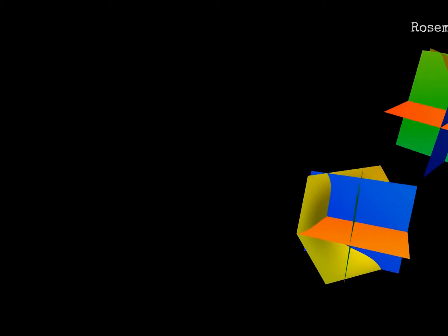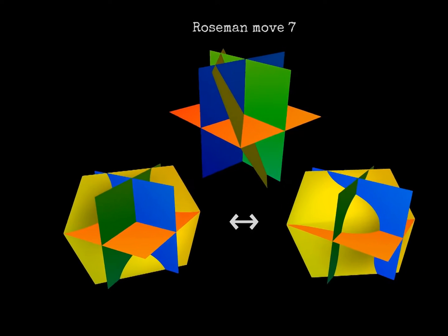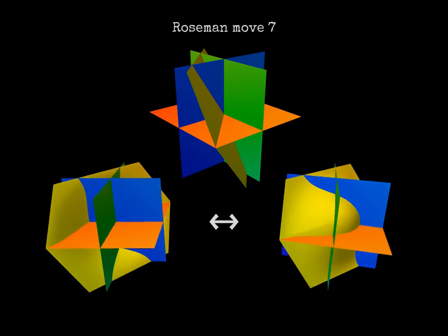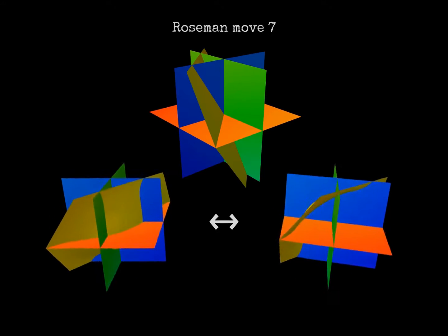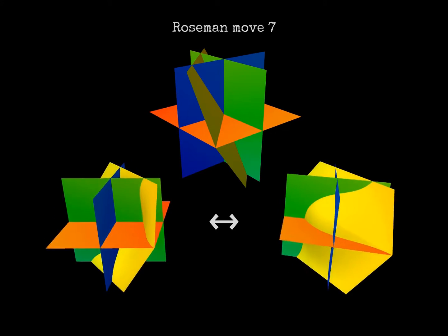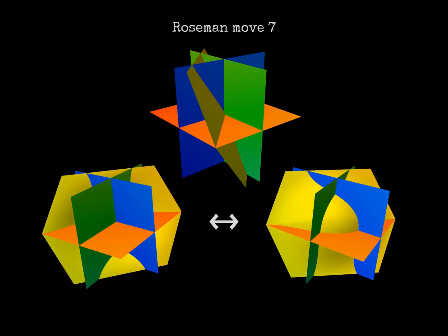Here is a last example that we have in part already seen. A point where four surfaces intersect is not allowed. Two ways of resolving it consist in pushing a piece of the surface, say the yellow one, in either direction. This move is called Rosemann move 7.